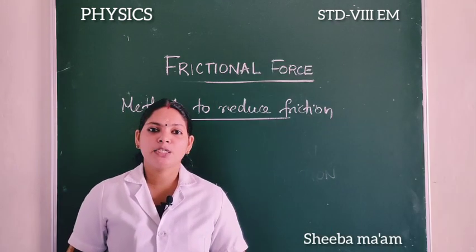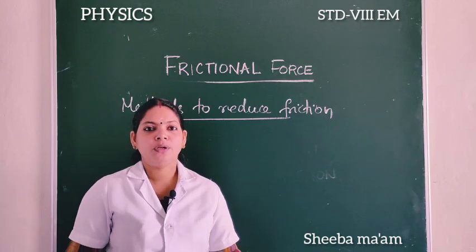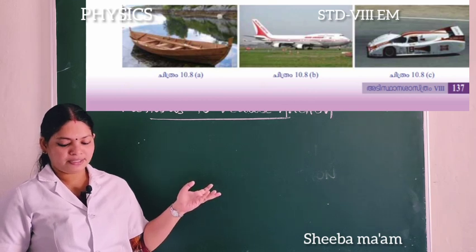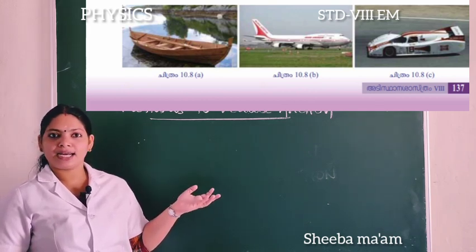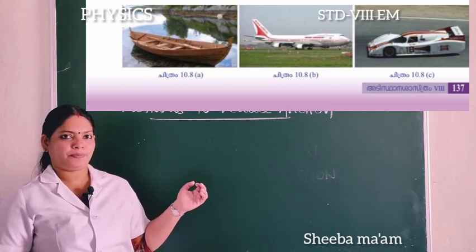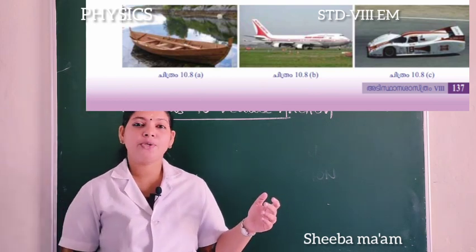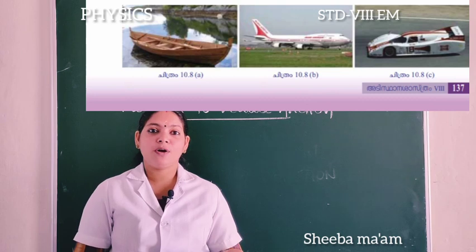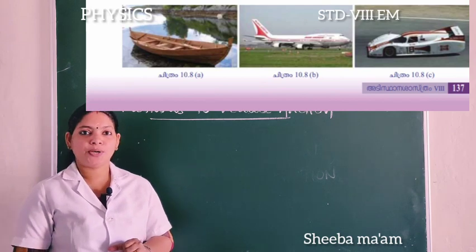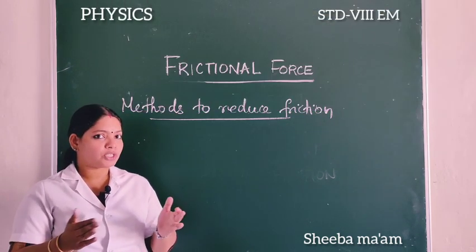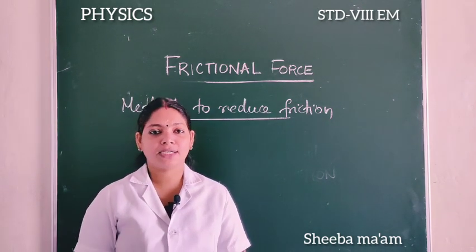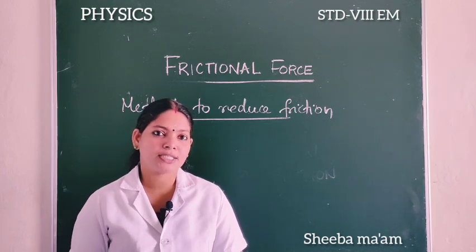Let us discuss the methods to reduce friction. Look at this picture. Here, a ferry, an aircraft, and a racing car are shown. These have a peculiar shape. This shape reduces friction. The designing of the shape of objects in order to reduce friction is known as streamlining. Streamlining of objects reduces friction.